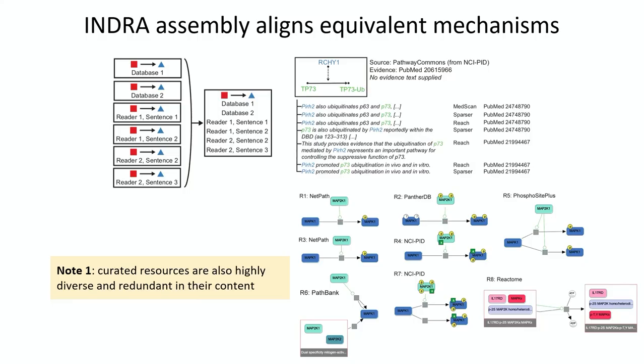Two notes related to this: redundancy happens quite a lot at the level of curated pathway databases as well, and often in complex ways. You see a snippet of different ways the very canonical interaction by which MAP kinase phosphorylates a substrate has been curated in Pathway Commons from different source databases. You see seven different reaction topologies for the same mechanism. So there's quite a bit of variability and non-trivial overlap at the level of pathway databases that has to be resolved.